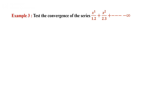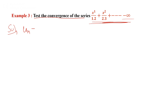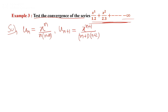Another example: Test the convergence of the series x/(1·2) + x²/(2·3) + x³/(3·4) + ... up to infinity. The series is completely positive so we can apply the ratio test. The nth term is x^n / (n(n+1)), and the (n+1)th term is x^(n+1) / ((n+1)(n+2)).